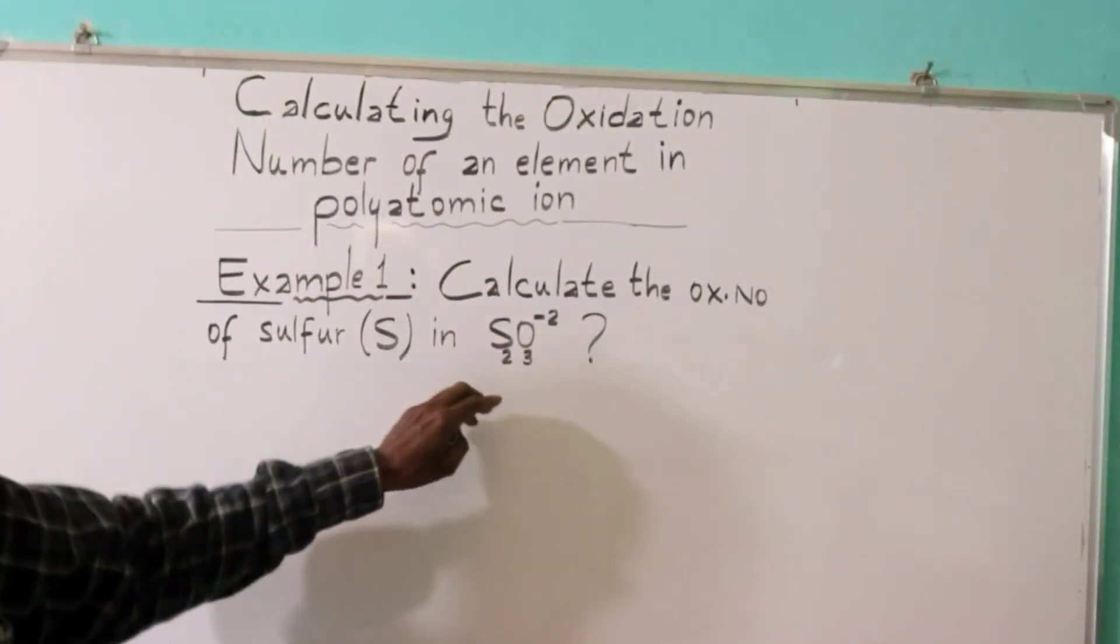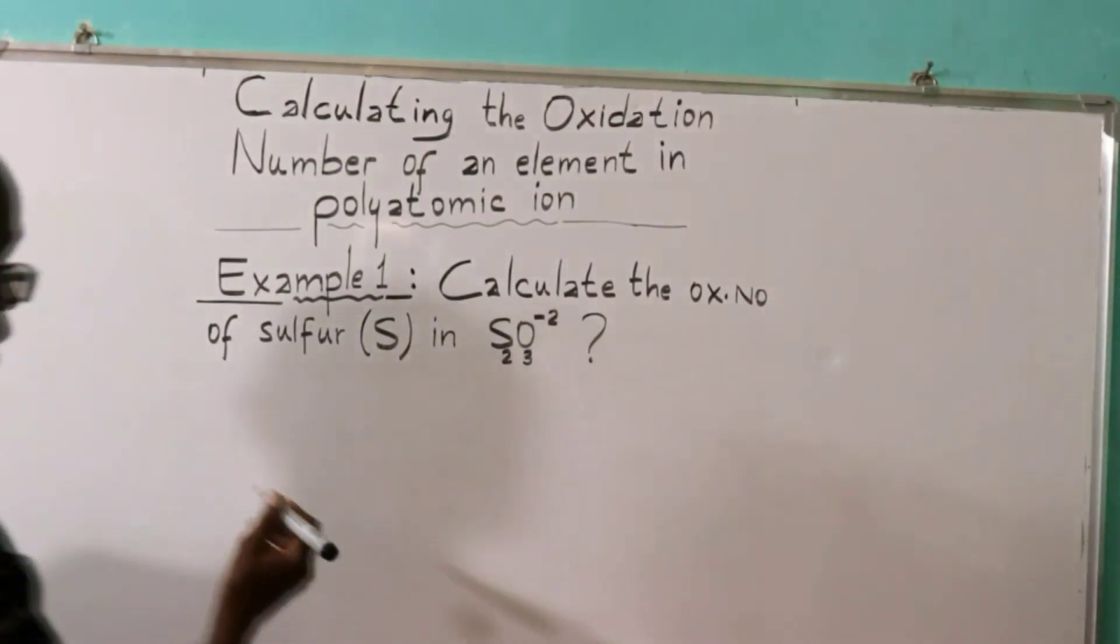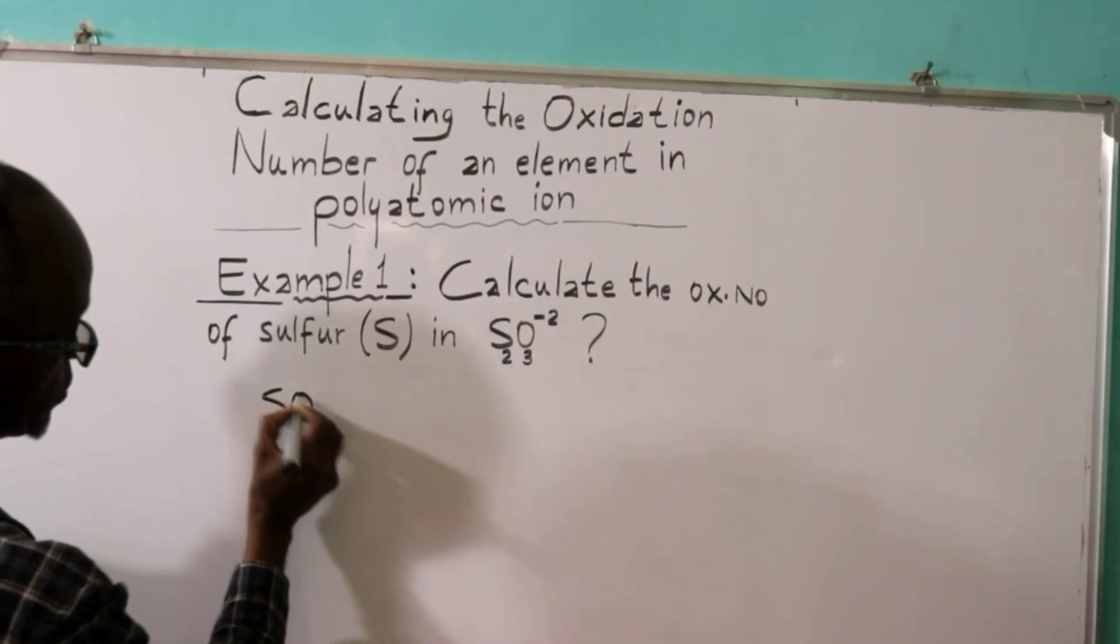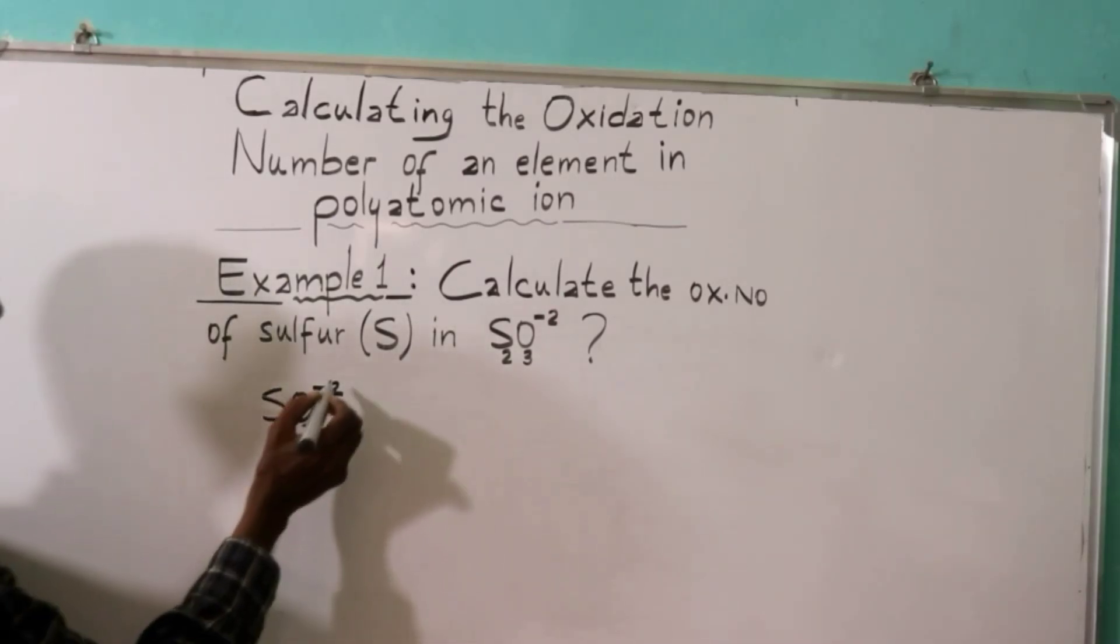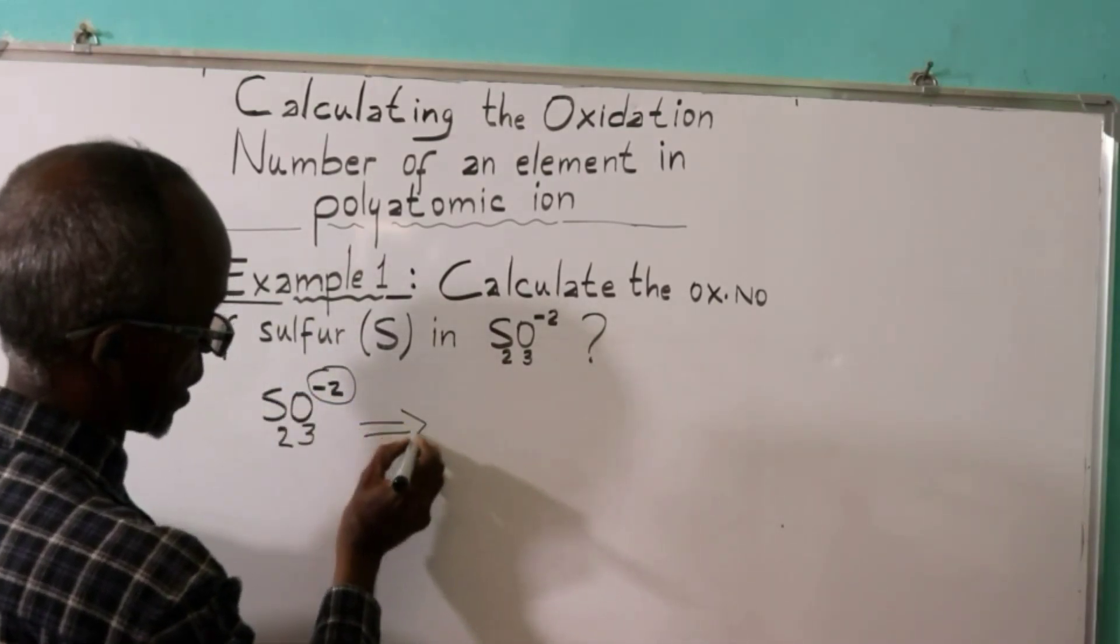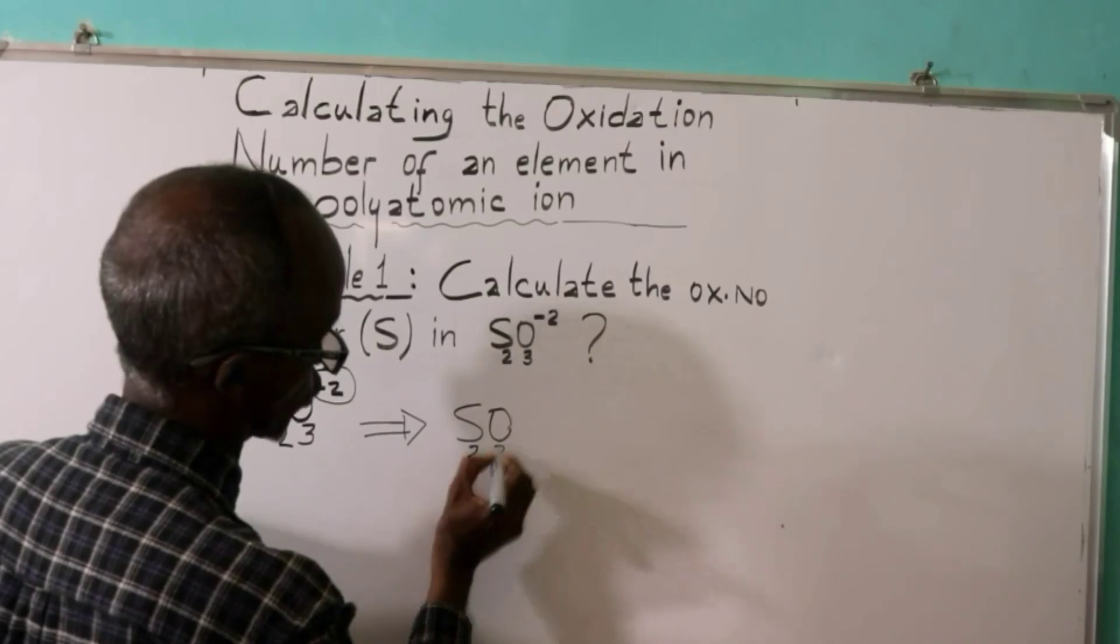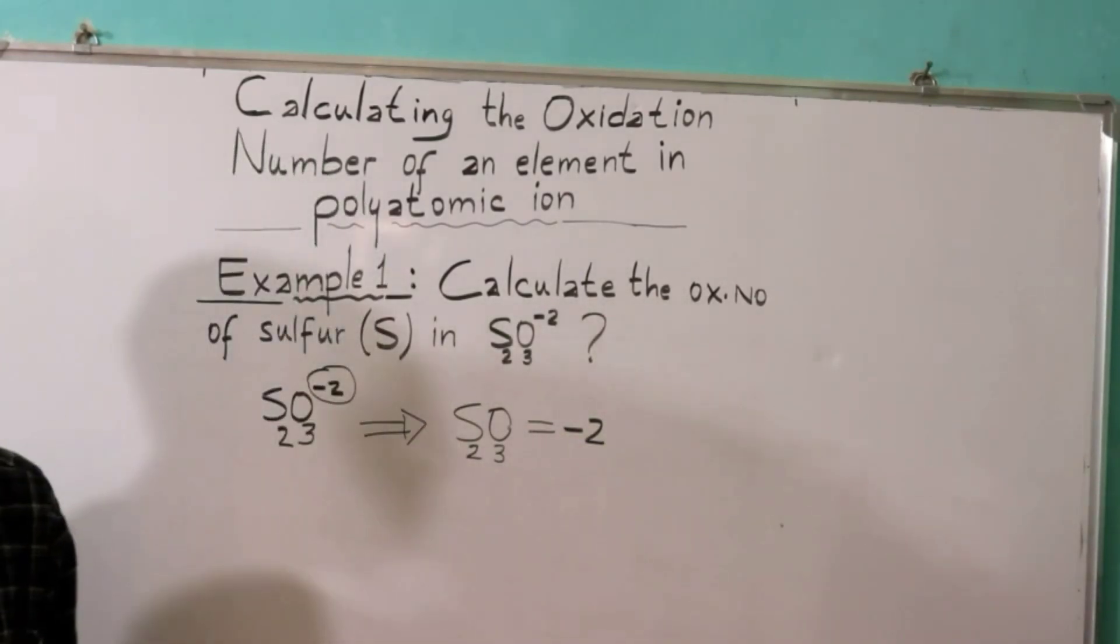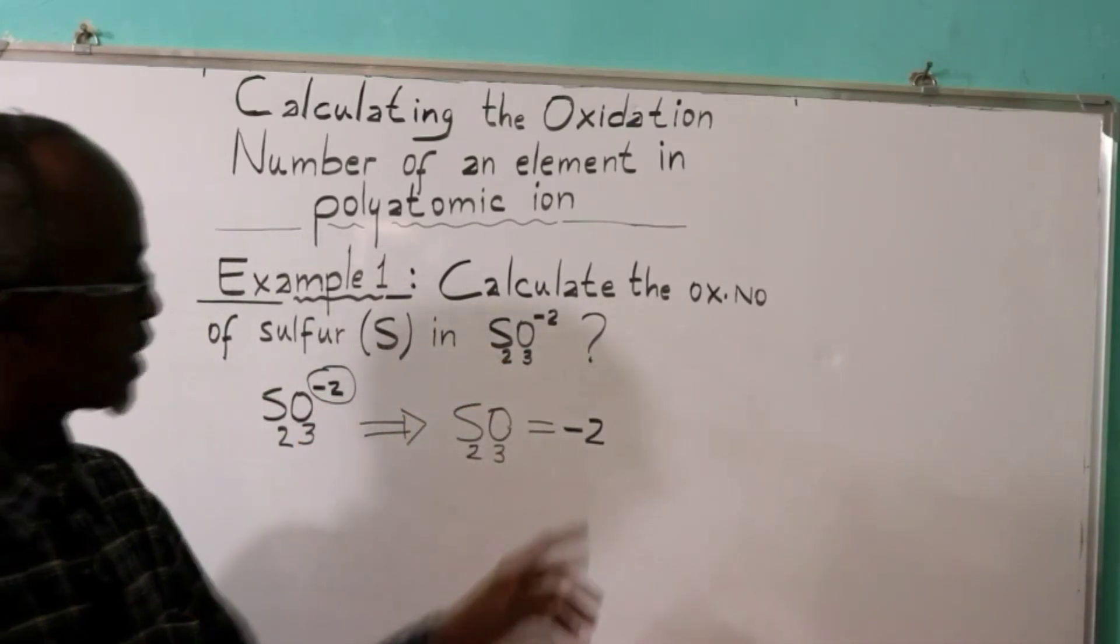We find S₂O₃ is equal minus 2. The oxidation number of polyatomic ion is the charge. We have S₂O₃ equals minus two.